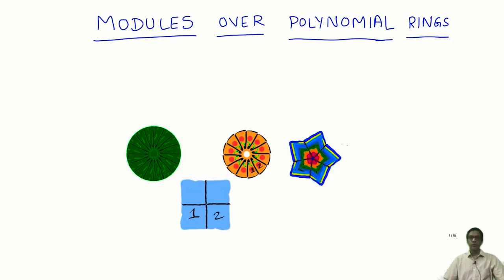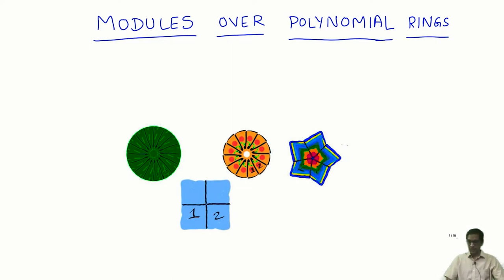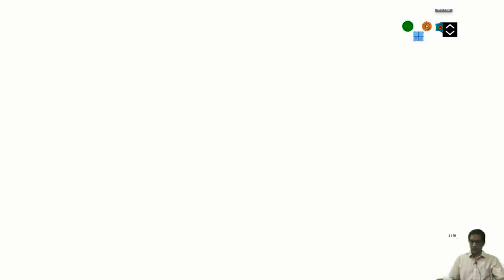Let us look at modules over polynomial rings. We have already looked at one example of modules over the ring of integers, and there we showed it is just nothing but the set of abelian groups. Those are exactly the modules. Now let us look at polynomial rings.